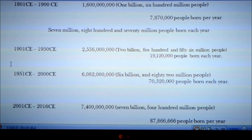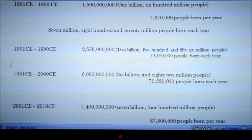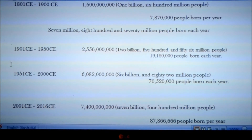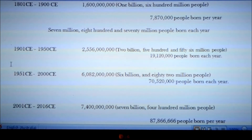For the next 50-year period, 1951 to 2000, 70 million people are born each year. The population is now 6,082,000,000 people.